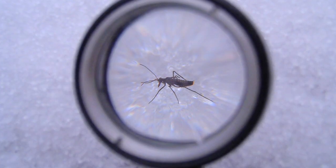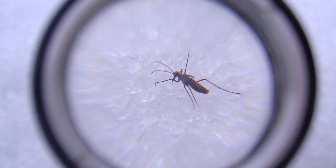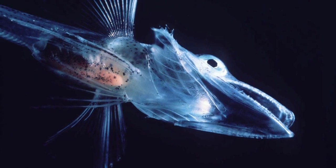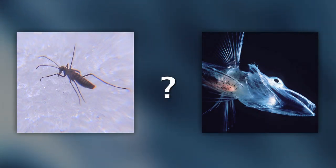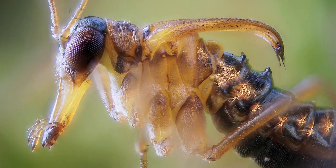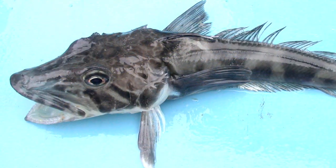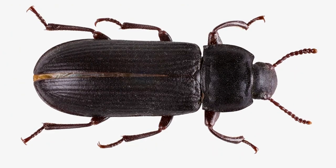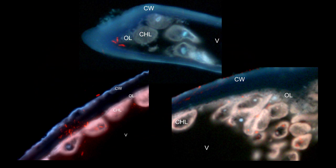Snow fleas are a species of insect often seen bouncing around on snow in winter. Ice fish live in the ocean at sub-zero temperatures. Both creatures can survive in sub-freezing temperatures because they make a class of proteins called antifreeze proteins. These proteins protect these organisms — and others, including moths, beetles, plants, and even bacteria — by binding to ice and stopping the growth of ice crystals in their bodies.